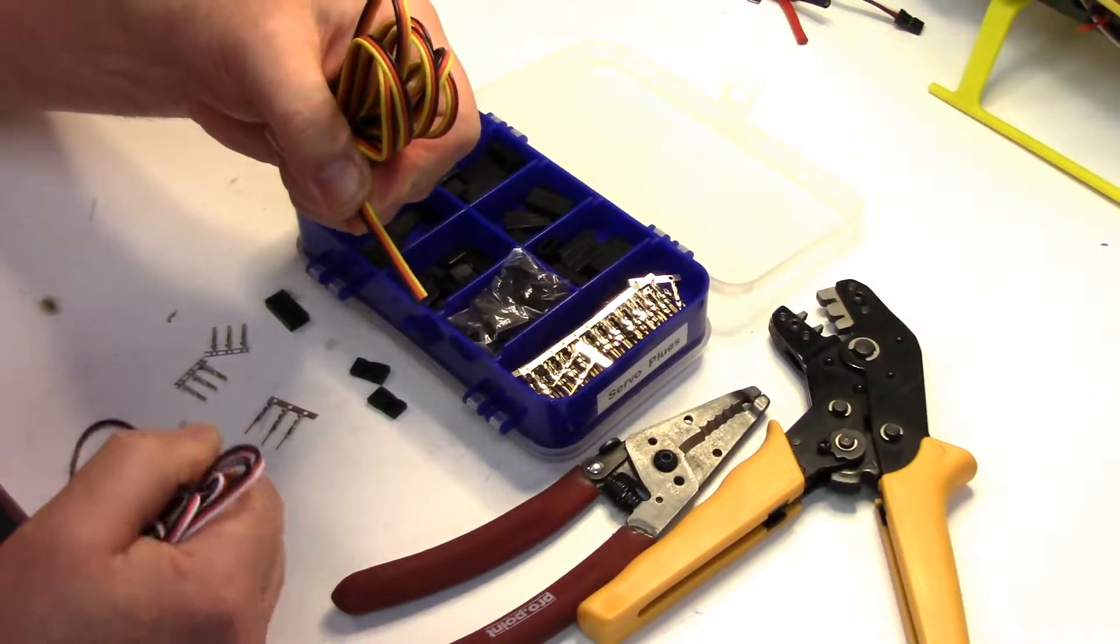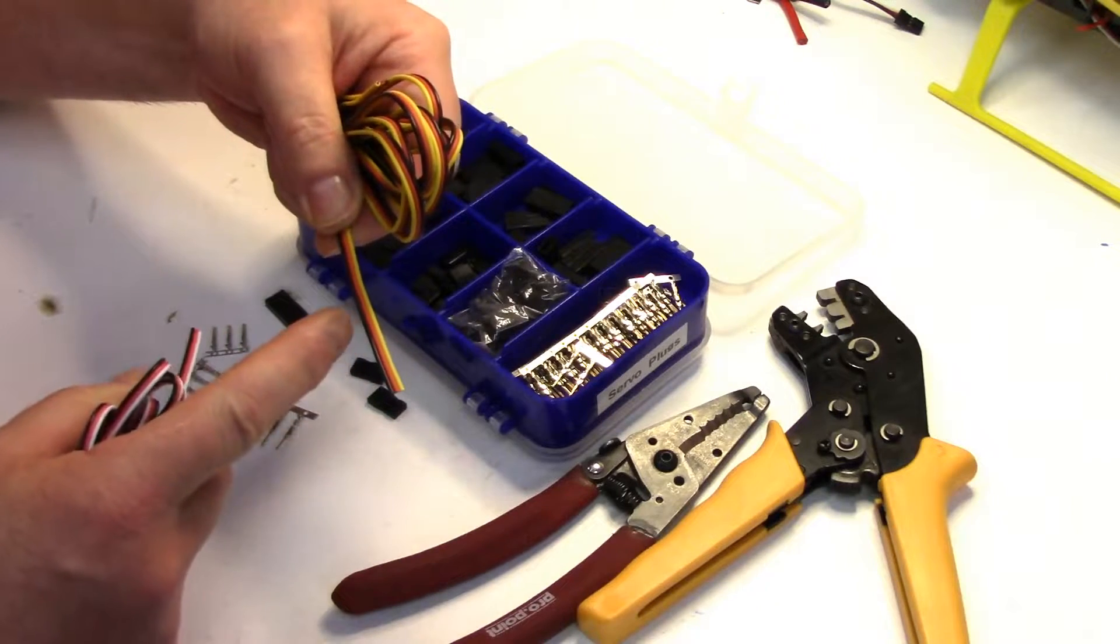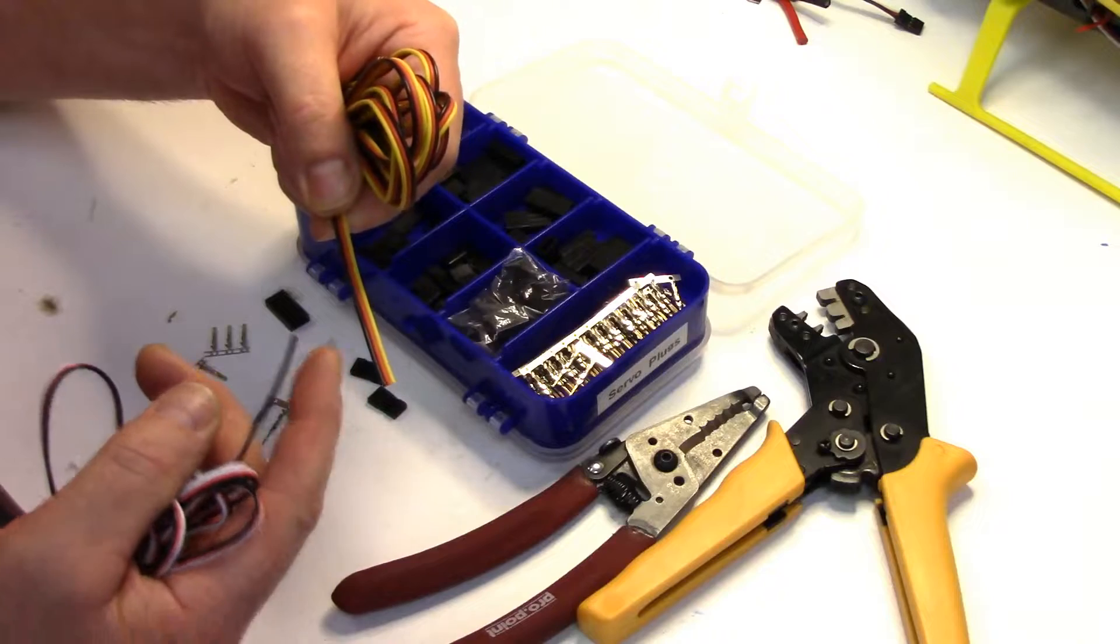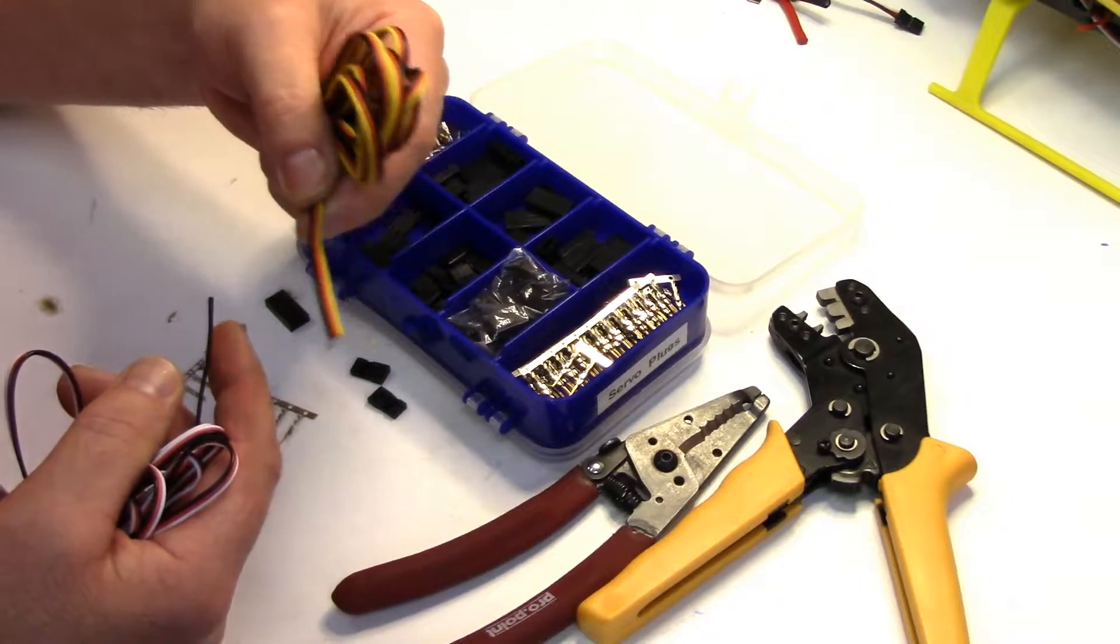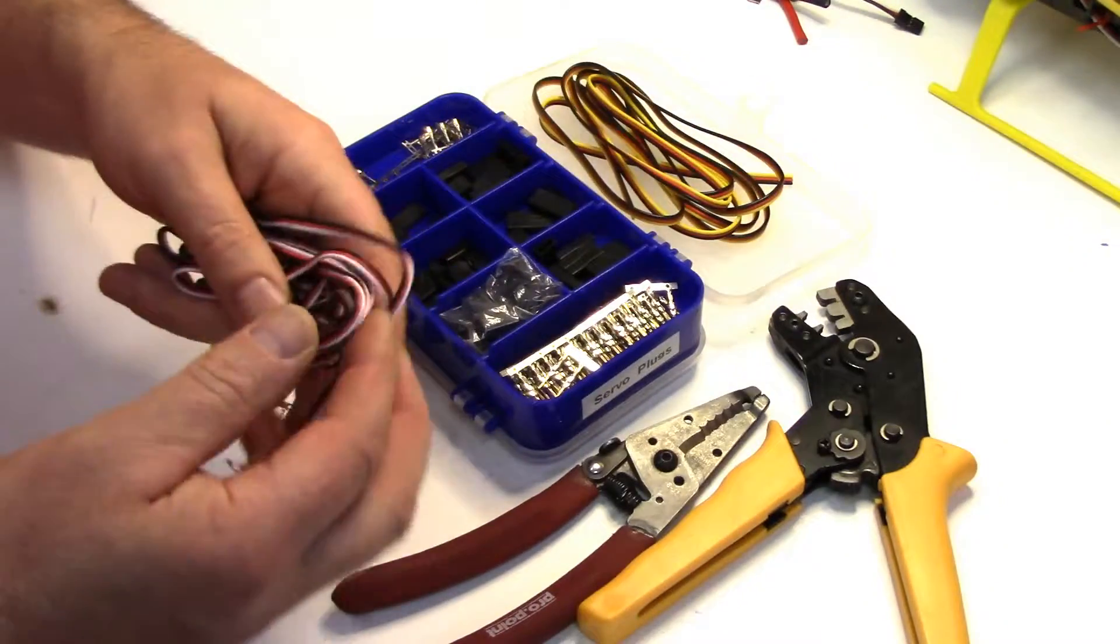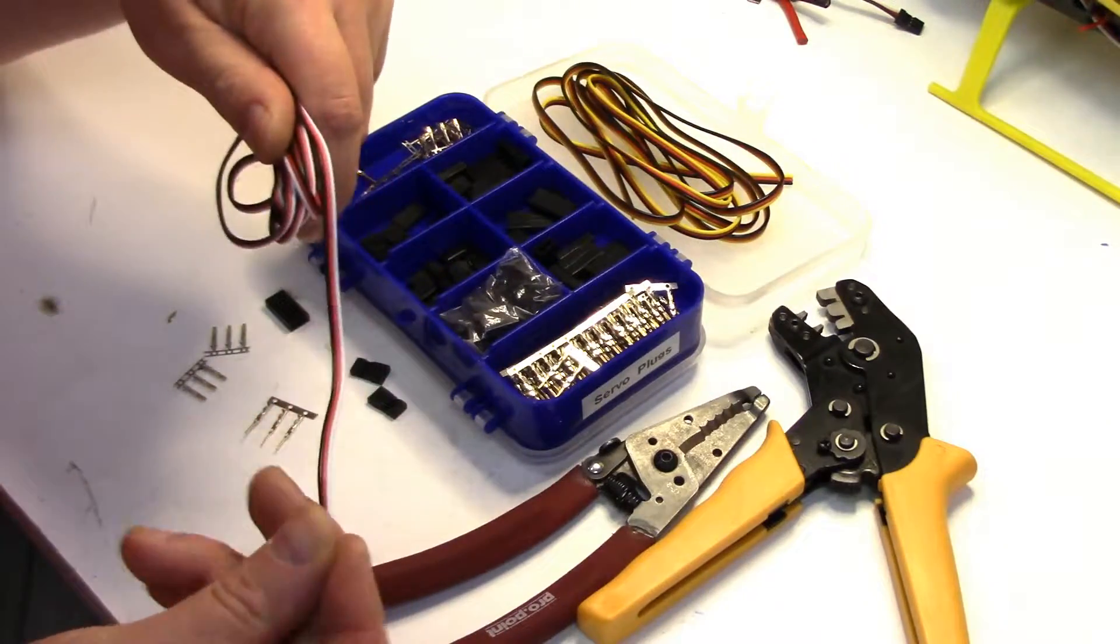If you're doing harnesses for the main harness that feeds the receiver or the flybarless system, it's going to be carrying more current. You'd use the heavier wire. But for low current stuff I just use the smaller stuff.